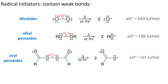Radical initiators contain weak bonds that can easily break to form radicals. These include dihalides like chlorine, bromine, iodine, and alkyl peroxides (ROOR).